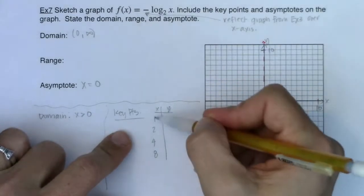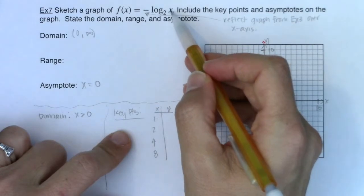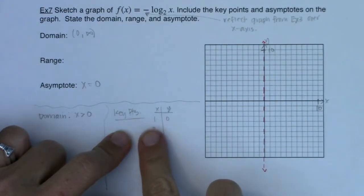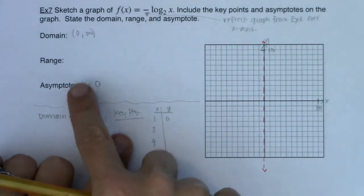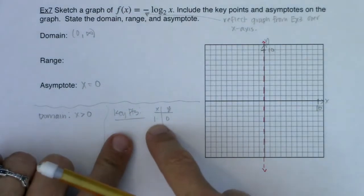All right so when I plug one in, log base two of one is zero. Zero times negative one is zero. Just take note there's my x-intercept right again where your argument was one. We're always interested where your argument is zero for vertical asymptotes and where your argument is one for x-intercepts.